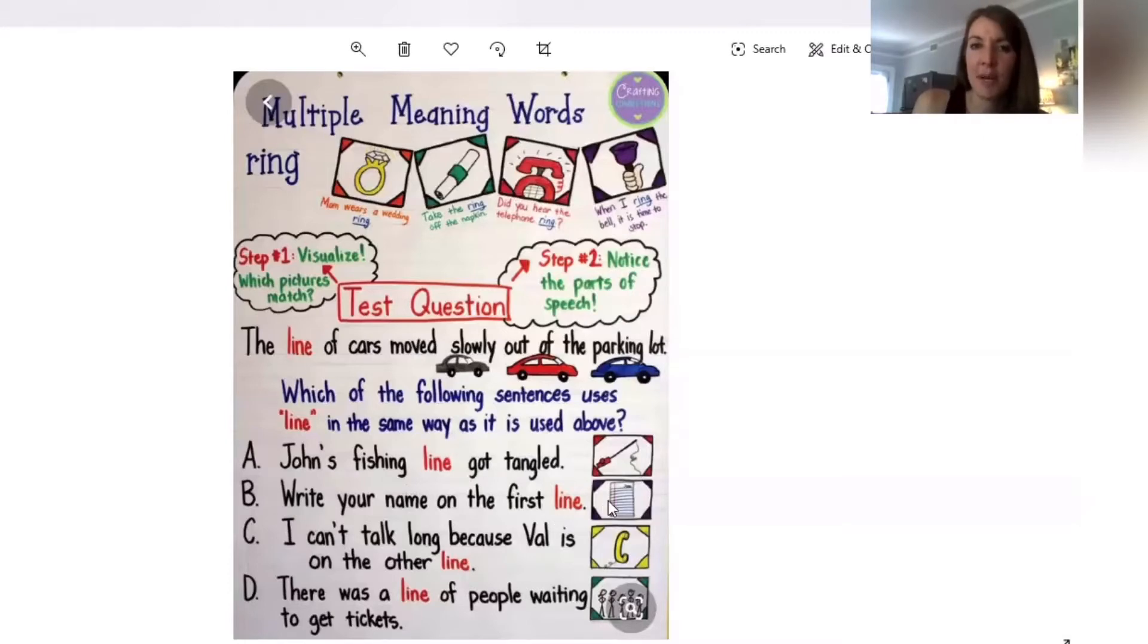Moving on, B: Write your name on the first line. Now I'm visualizing a piece of paper with horizontal markings on them that help me so I'm not writing crooked and it keeps my paper nice and organized. Does that mean that all of these things are in a row? Not in the same way as a line of cars.